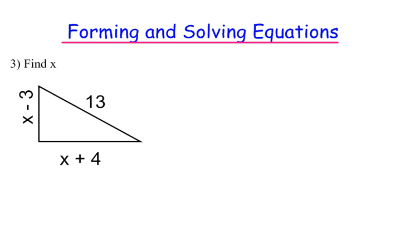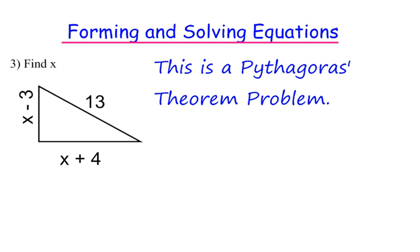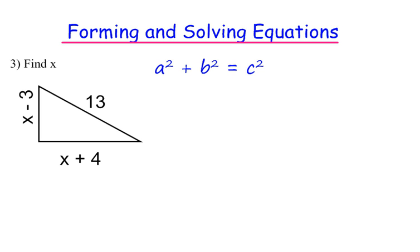Example 3: Find x. This is a right-angled triangle, so we can use Pythagoras theorem to solve it. For Pythagoras theorem, a squared plus b squared equals c squared. So a is x minus 3, b is x plus 4, and c is 13, remembering to square each term.